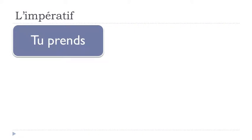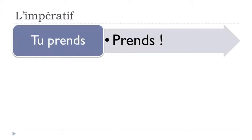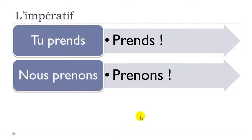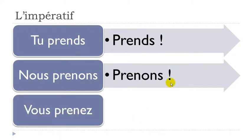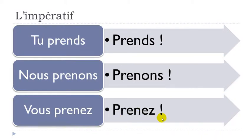For the third group, taking 'prendre' as an example: 'tu prends' stays as 'Prends!', 'nous prenons' becomes 'Prenons!', and 'vous prenez' becomes 'Prenez!' So the third group is quite easy — you don't change anything, just take away the pronom personnel to get your imperatif form.